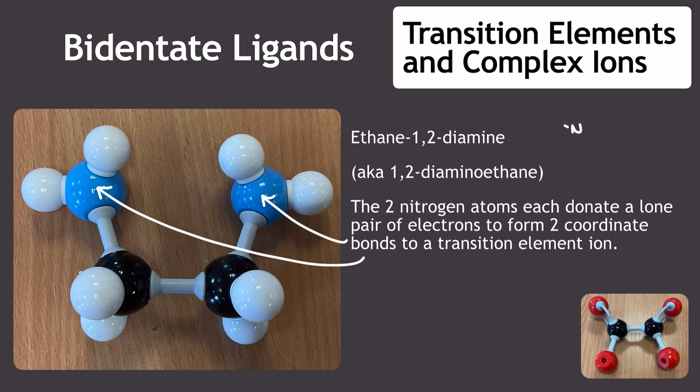And as you can see from the structure of this ethane 1,2-diamine, a very common bidentate ligand, it's the nitrogens here in this structure, and each one of them is going to form its own coordinate bond. Think of them as like crabs with claws, and those claws are latching on to the transition element ion at the core of the complex ion structure.